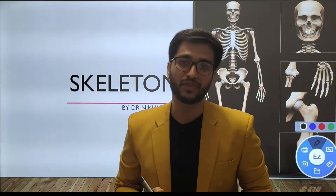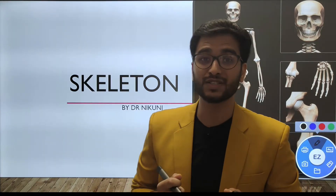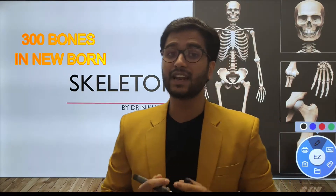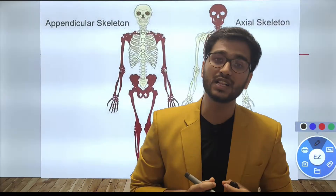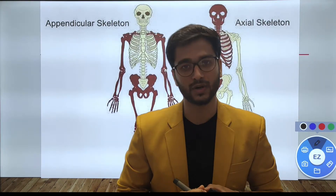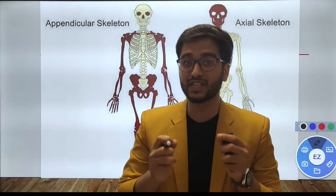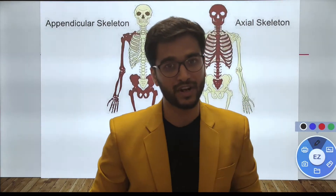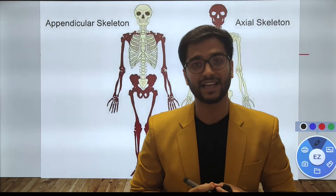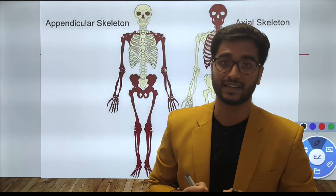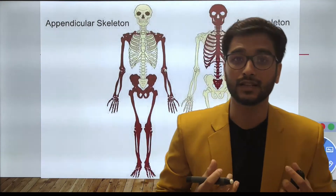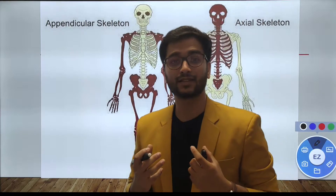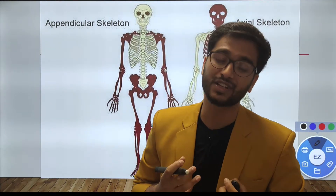Bones are the vital component of the human skeleton. A human newborn baby is born with approximately 300 bones, where an adult has 206 bones. These 206 bones can be divided into two compartments. The first group are those present at the mid-axis of the body, known as the axial skeleton. The other group, present parallel to the mid-axis, is known as the appendicular skeleton.